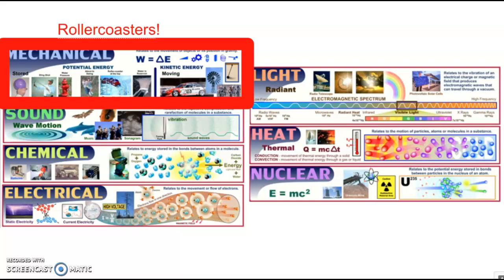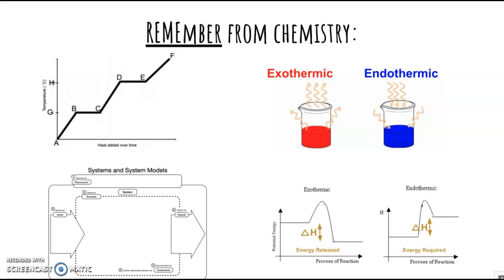Just as a reminder, this isn't the first time we've seen energy this year. In the first half, when we studied chemistry, we really focused on chemical energy. You had several ways of conceptualizing chemical energy. One of the biggest ideas was that energy is conserved. It comes from somewhere and it goes somewhere.